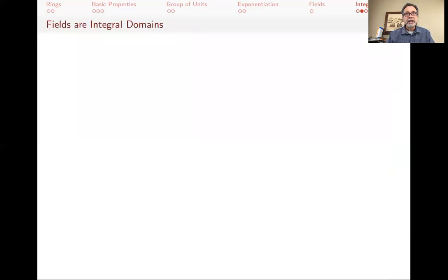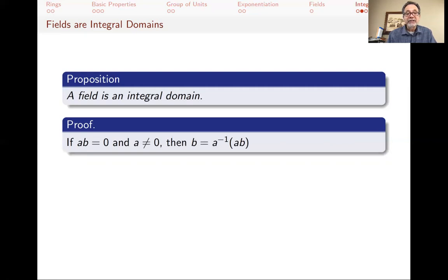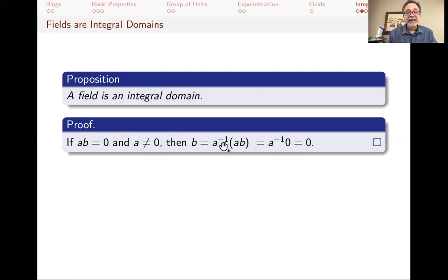Every field is an integral domain. A field has at least two elements and is a commutative ring with identity, so we only need to show it has no zero divisors. If ab equals zero and a is not zero, then since a has an inverse (we're in a field), we have b equals a-inverse times ab equals a-inverse times zero equals zero. So b must be zero — there are no zero divisors. Therefore every field is an integral domain.